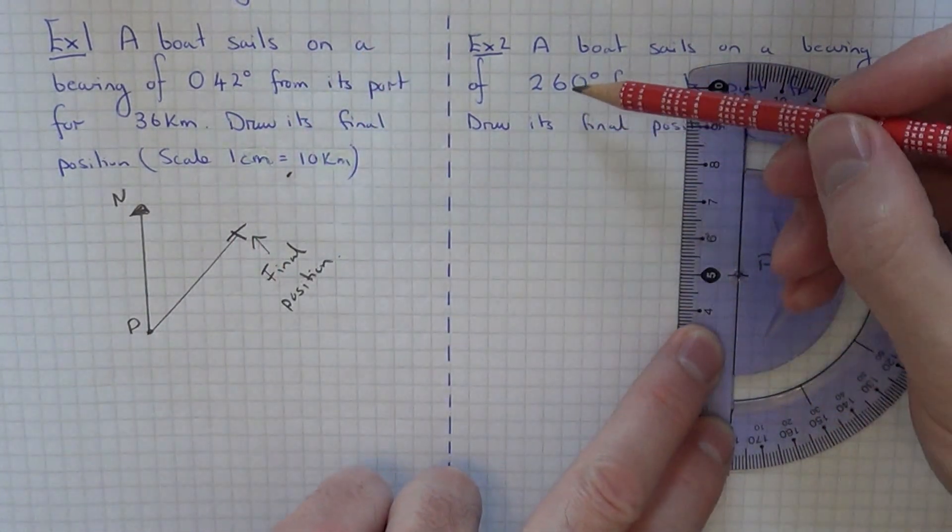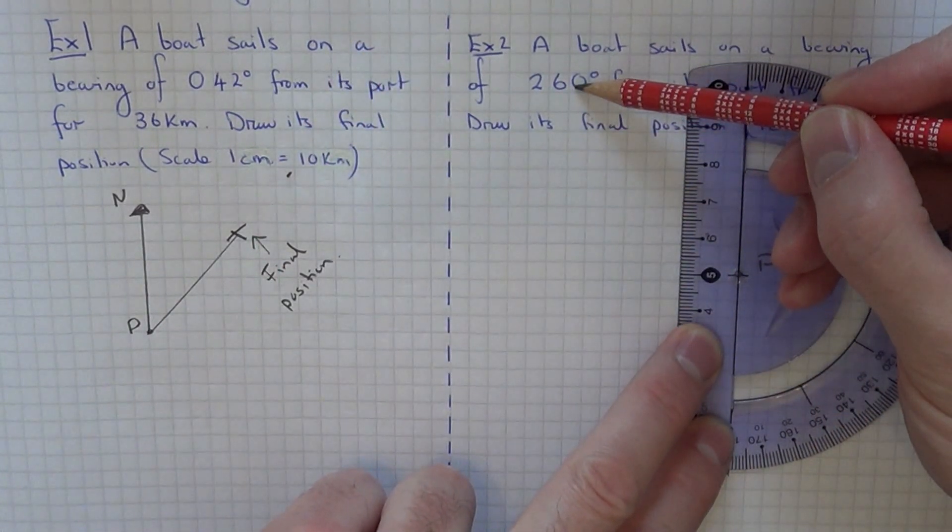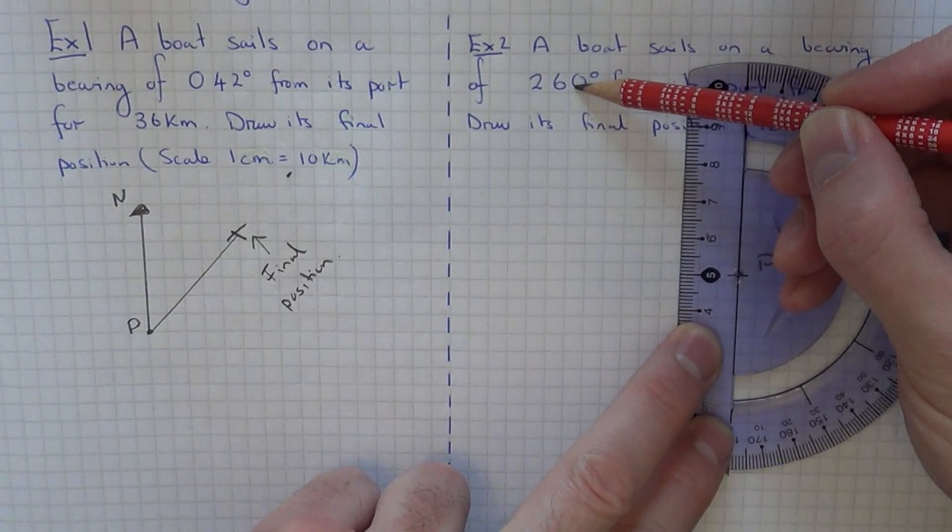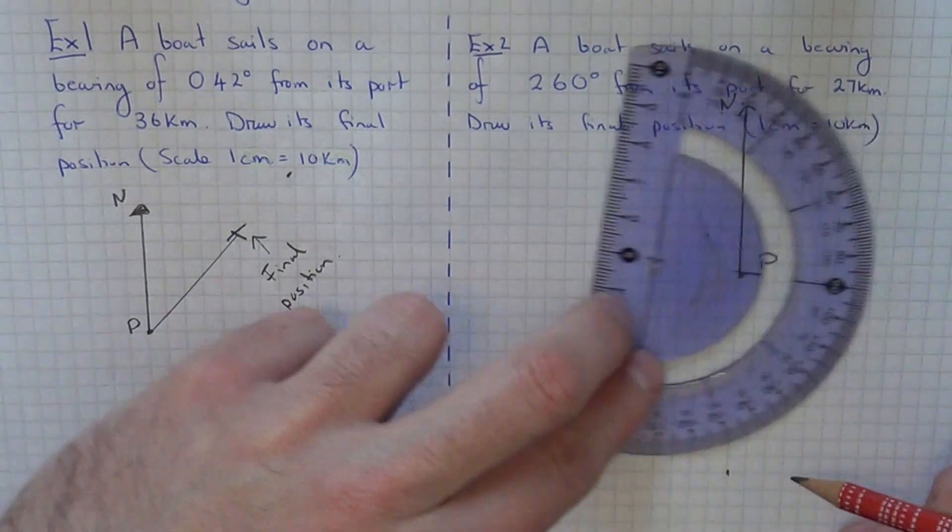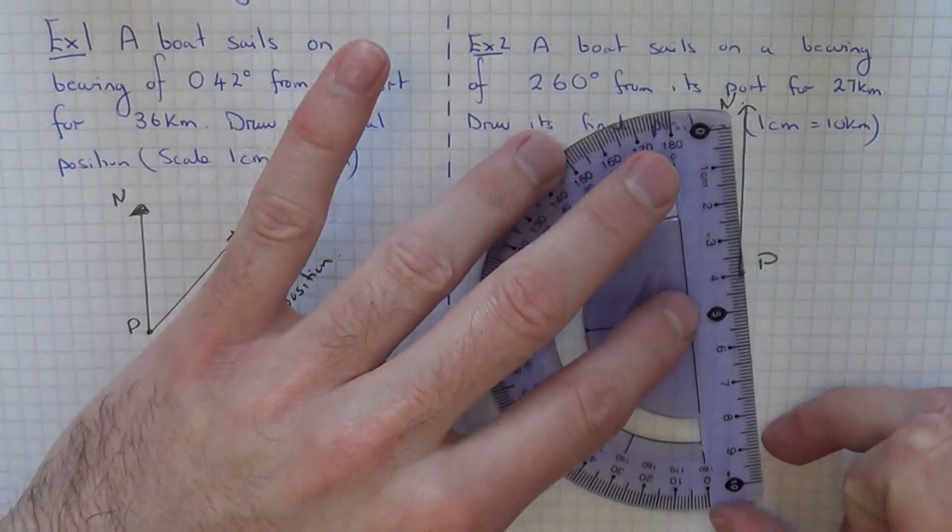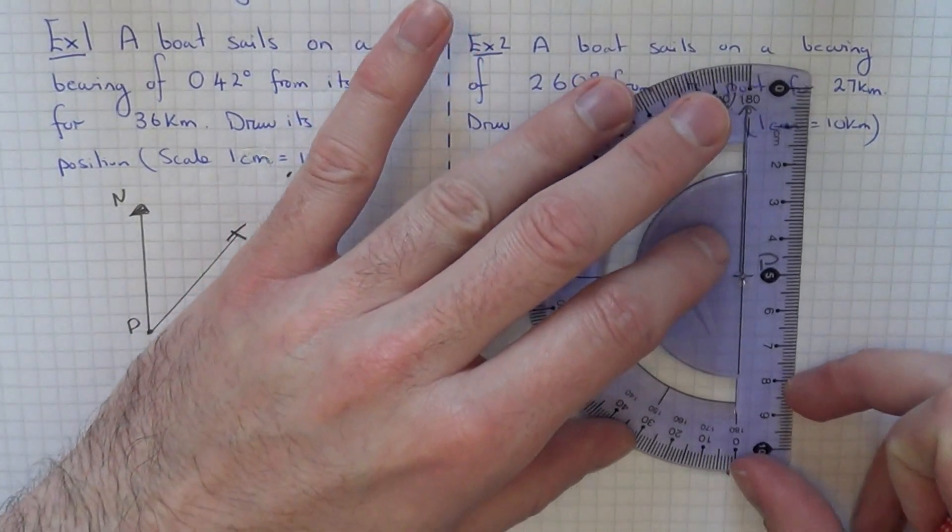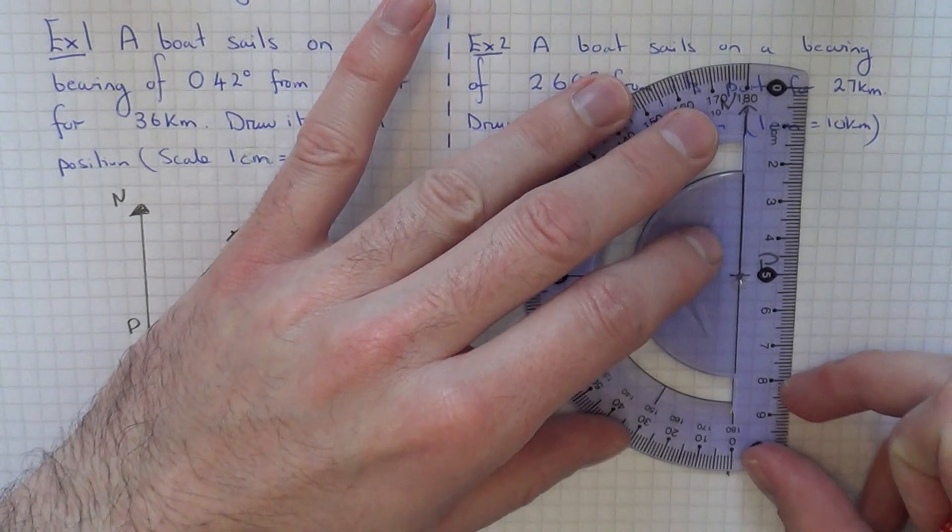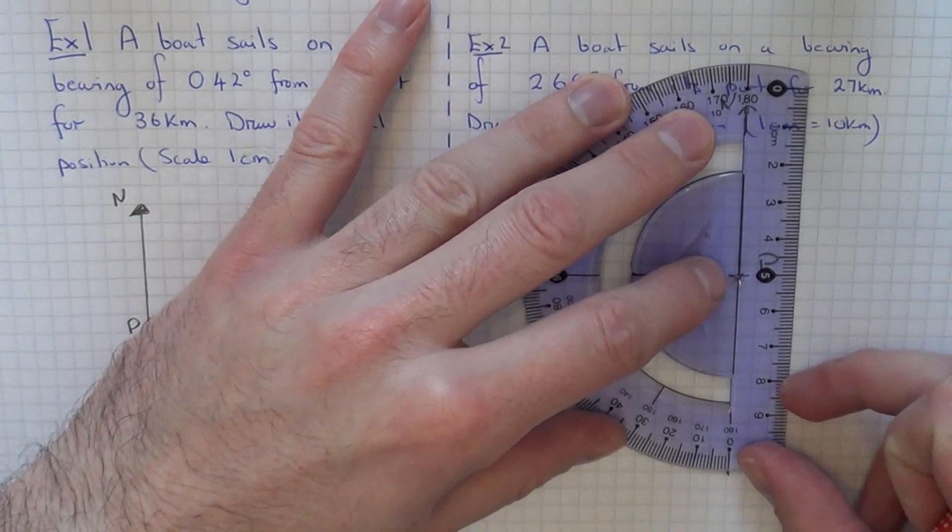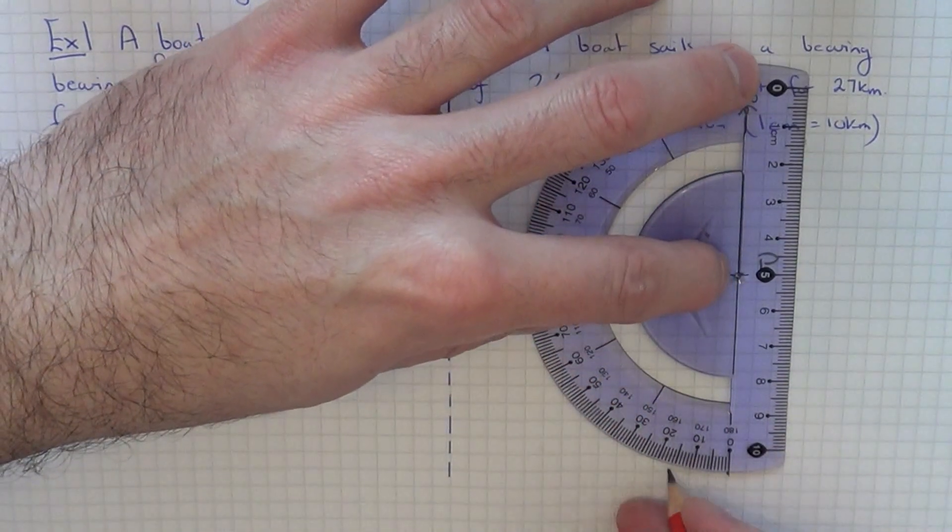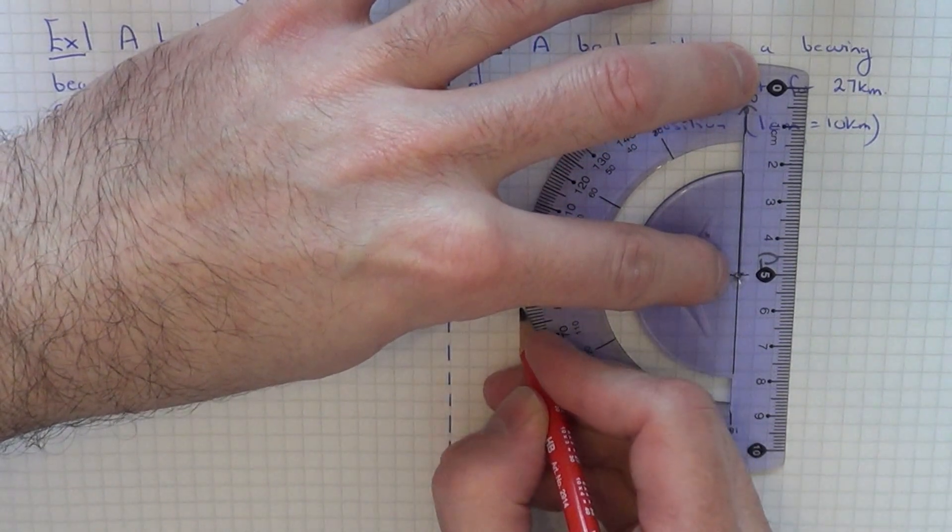If we subtract 180 off 260, that leaves us with an extra 80 degrees to measure around from the bottom. Turn the protractor around. We want an extra 80 degrees to make it to 260.